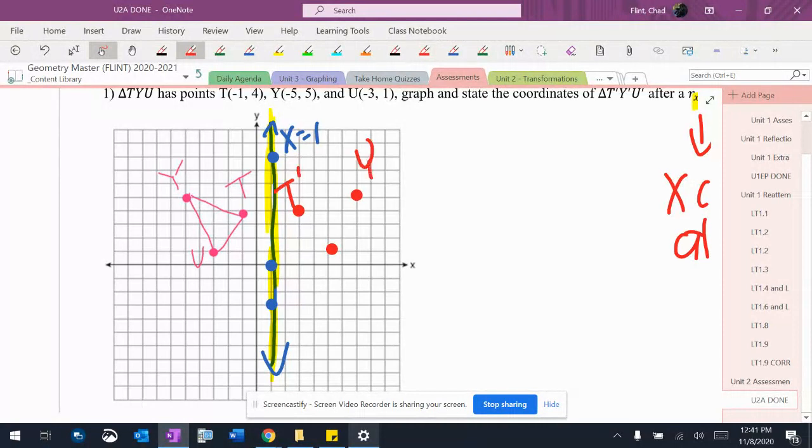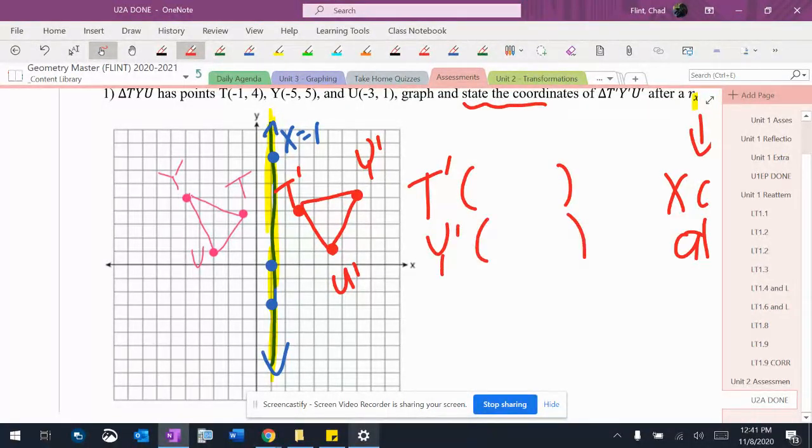So T prime, Y prime, U prime. So T is at (2,4). T prime is at (2,4).